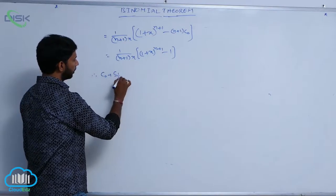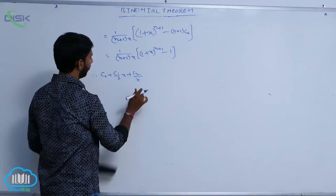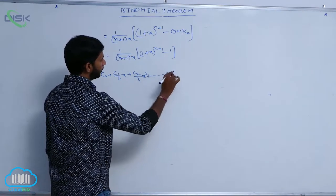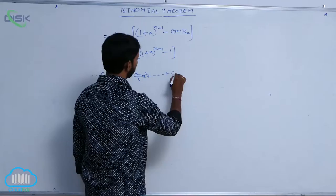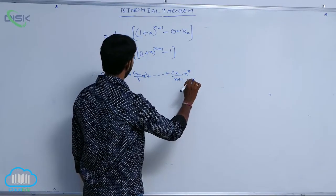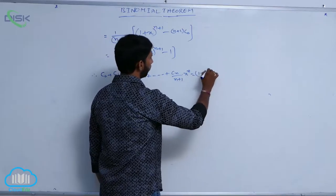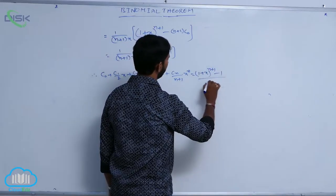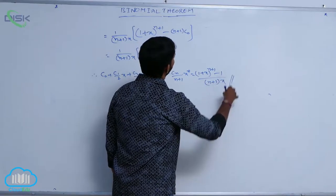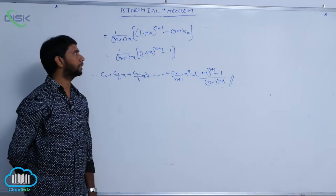C₀ plus C₁/2 · x plus C₂/3 · x² plus ... plus Cₙ/(n+1) · xⁿ equals [(1+x)^(n+1) minus 1] divided by [(n+1)x].